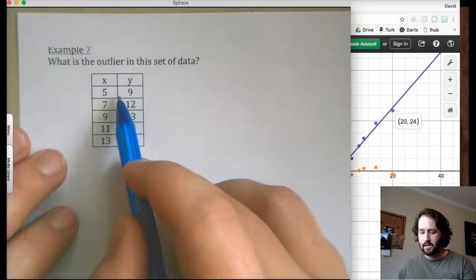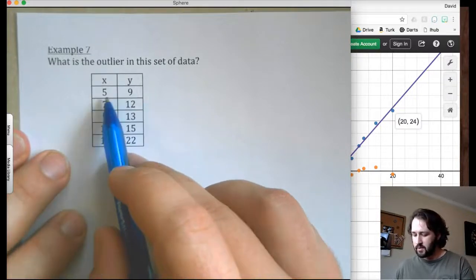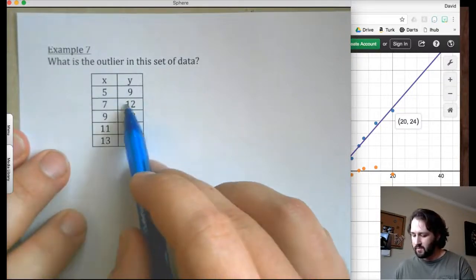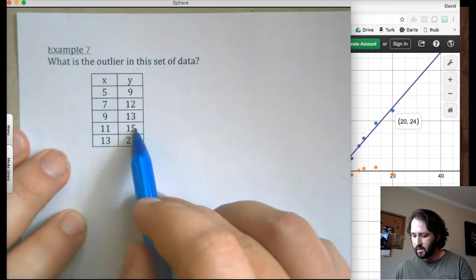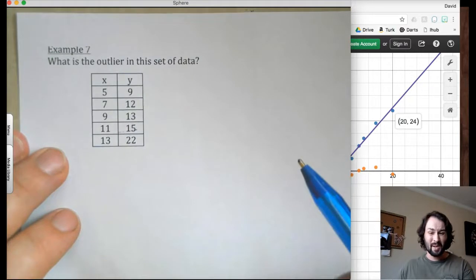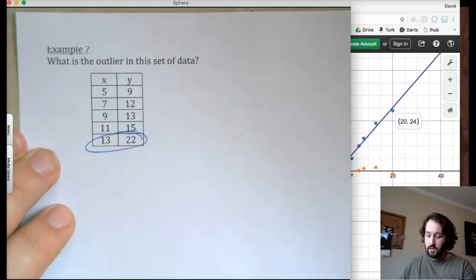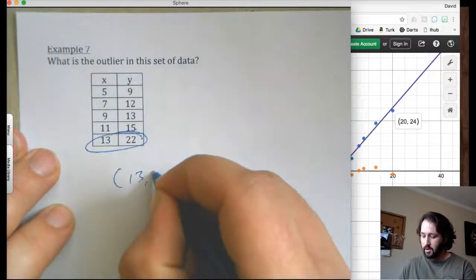So an outlier is kind of just like the oddball. So if it's linear, it's going to be going by about the same amount. So this one, 5 to 9, looks like that's about 4 above. That's about 5 above. That's about 4 above. That's about 4 above. That's about 9 above. Whoa! 9 above the x value? That's crazy. That's kind of an oddball. So that is called our outlier.